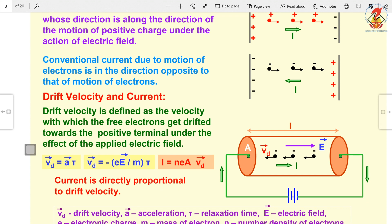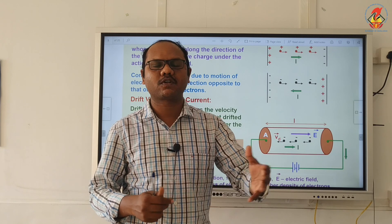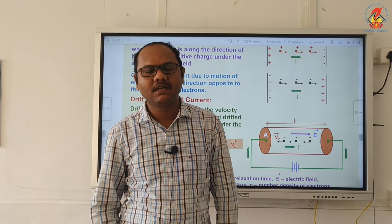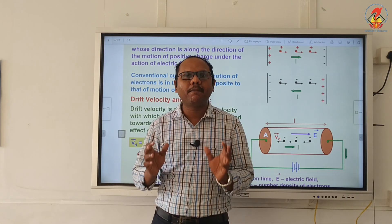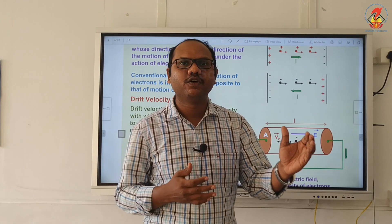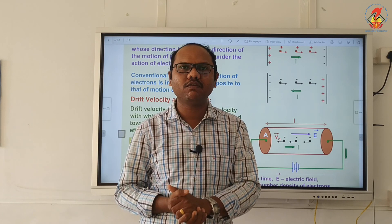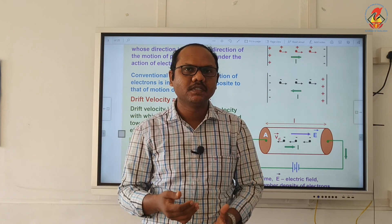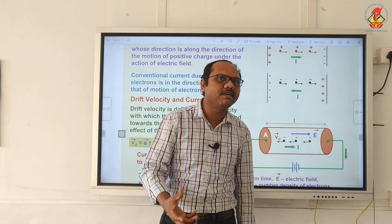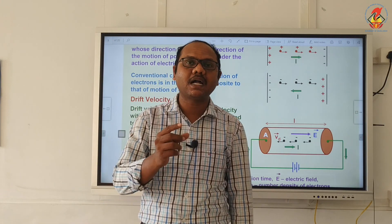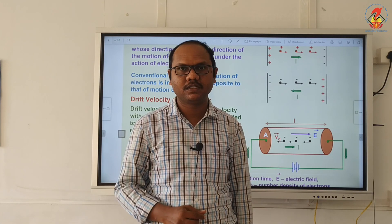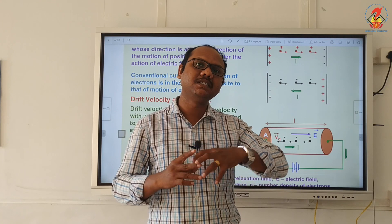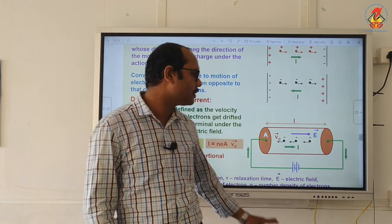Electric current is actually the movement of electrons. These electrons are in random motion in a conductor when no electric field is applied — the average velocity is zero. But when we apply an electric field, the electrons start moving opposite to the direction of the electric field.